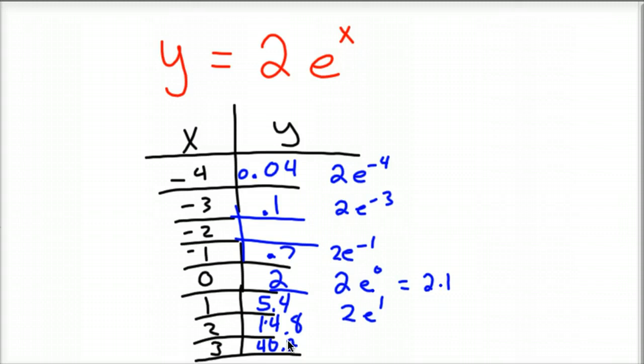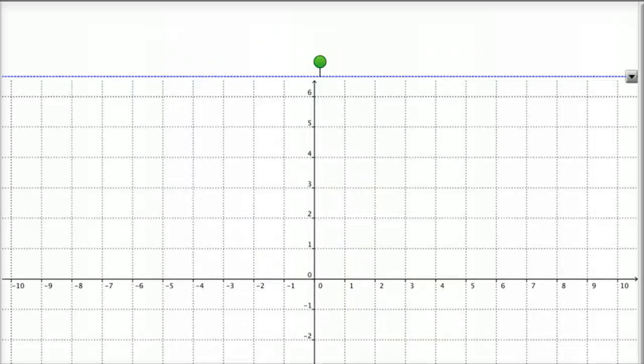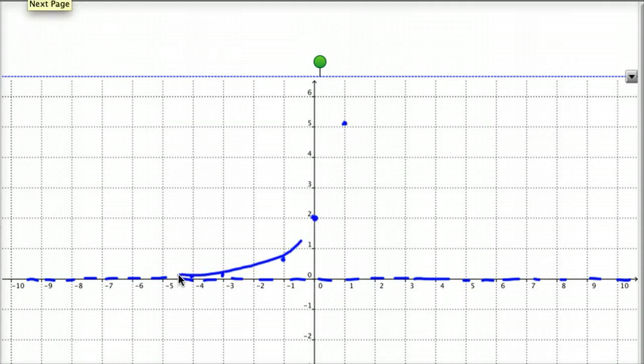So then you could go ahead and graph those things. And what you'd have generally would look like this. So negative 4 is almost at 0. So we've really got an asymptote here on the x-axis. And then negative 3, it hasn't budged much. It's still way down there. Negative 2, it's starting to pull up a little bit. Negative 1 is clear up here to 0.7. And then at 0, it's at 2. And then at 1, it's at 5.4. And we're already off my scale here. And so this is generally what that equation looks like.